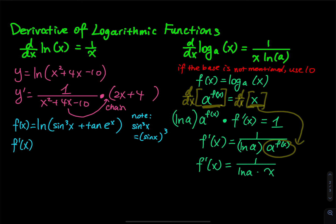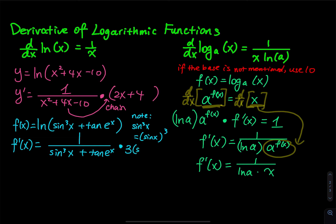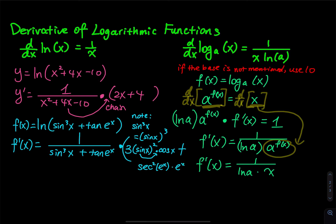Taking f′(x): bring sin³(x) + tan(eˣ) to the denominator with 1 on top, then multiply by the derivative of the numerator. Derivative of sin³(x): bring the 3 down, giving 3·sin²(x)·cos(x) by chain rule. Derivative of tan(eˣ): sec²(eˣ) times eˣ.